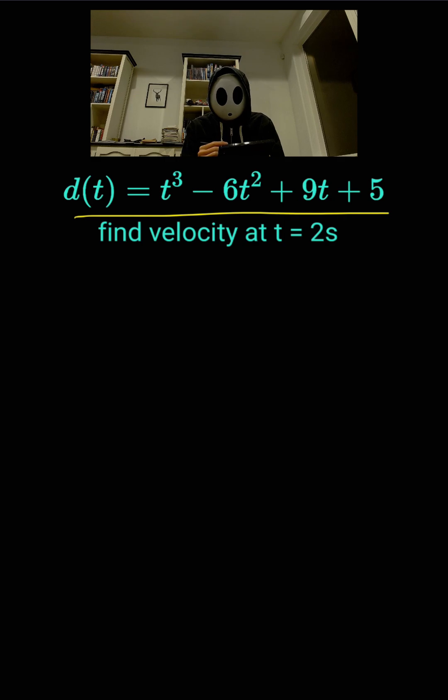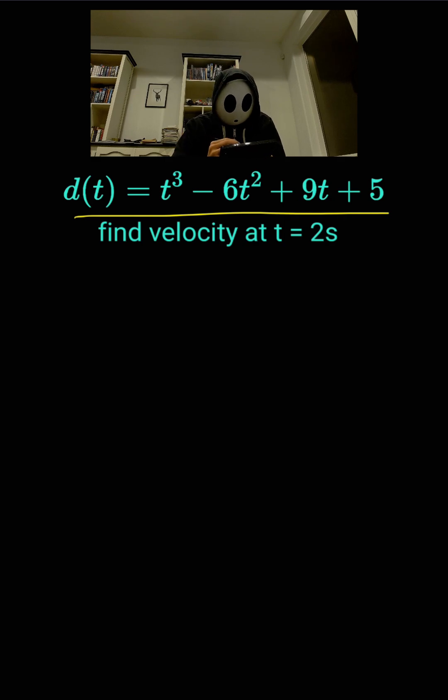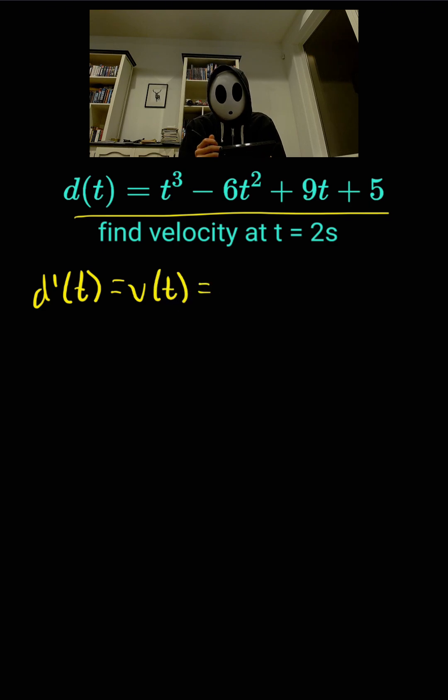In order to find the function for velocity, let's find the derivative. d prime of t, which is the derivative of a function, is the same thing as the function of velocity.